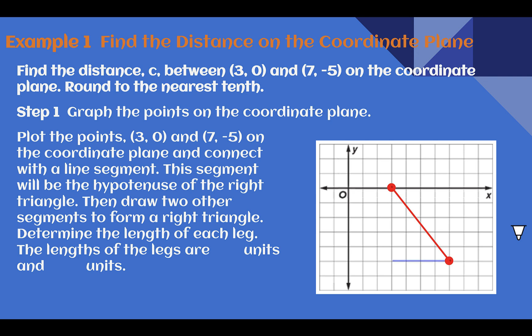Once I have my points plotted, I'm going to connect them and that is going to form my hypotenuse. From there, I'm going to make a right triangle. So there's one leg, there is the other leg. Once I count the legs, I find this bottom one is 1, 2, 3, 4 units long and this one is 1, 2, 3, 4, 5 units tall.